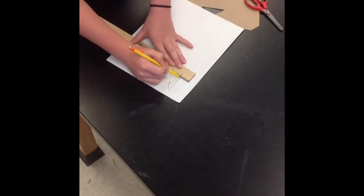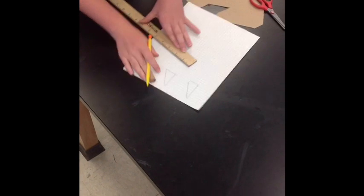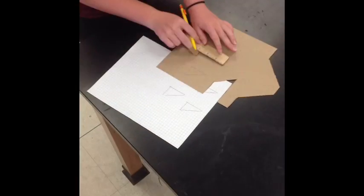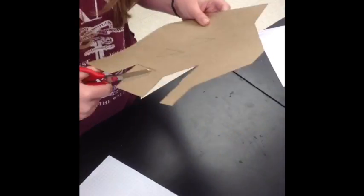First draw out some rocket fins. Remember they at least need to be 2 inches. Then transfer the measurements to cardboard. Draw your rocket fins onto cardboard. Now cut them out. Now they are ready to be glued onto your rocket tube.